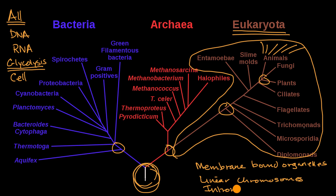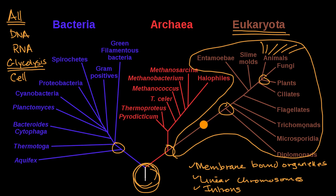Introns are sequences of DNA that don't code for genes that will then code into proteins. We're still exploring what the point of introns are. But the reason why all of these have been classified together is that they have these similarities, and so we believe that they would have formed their own branch.